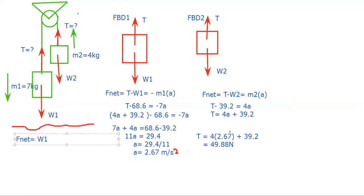So if we'll subtract weight 1 minus weight 2, what is our F net if we will subtract weight 1 with weight 2? That's 68.6 minus 39.2. You'll notice that that's equals to 29.4. Am I right?